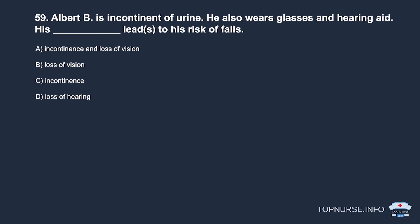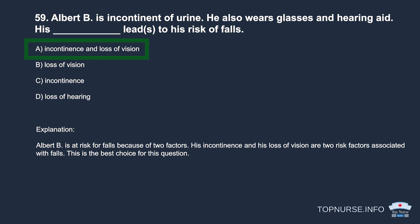Question 59: Albert B. is incontinent of urine, wears glasses, and wears a hearing aid. What leads to his risk of falls? a. Incontinence and loss of vision. b. Loss of vision. c. Incontinence. d. Loss of hearing. Correct answer: a. Incontinence and loss of vision. Albert is at risk for falls because of two factors: his incontinence and his loss of vision — both are risk factors associated with falls.